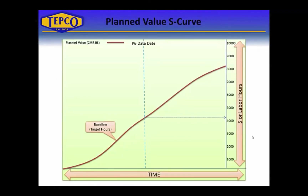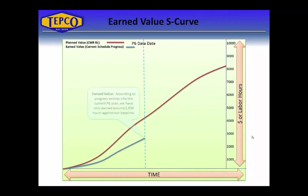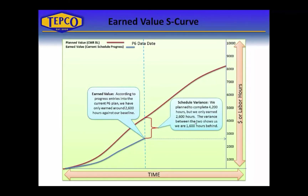Now let's relate SPI to an S-curve. Here we have an example S-curve with a baseline S-curve shown in red. The data date is coming down as a blue dashed line. Our planned value as of the data date was 4,200 hours. According to progress entries, we have earned around 2,600 hours against our baseline. Now that we have the earned value and the planned value defined in the S-curve as of the data date, we're able to use those two figures to give a schedule variance.